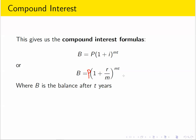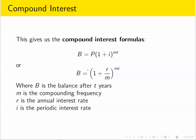B represents the balance after t years, m is the compounding frequency, r is the annual interest rate, i is the periodic interest rate, and P is the principal.